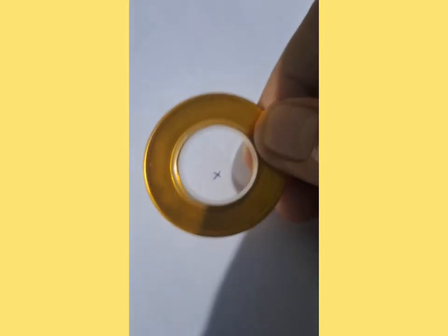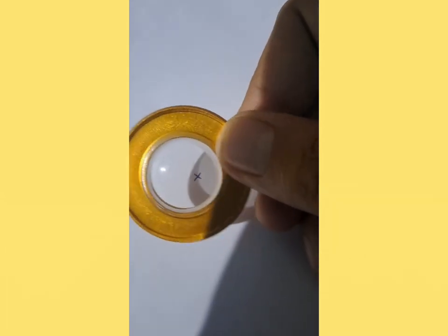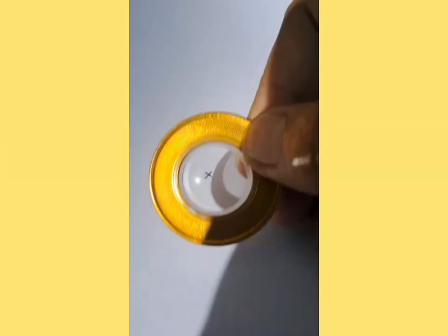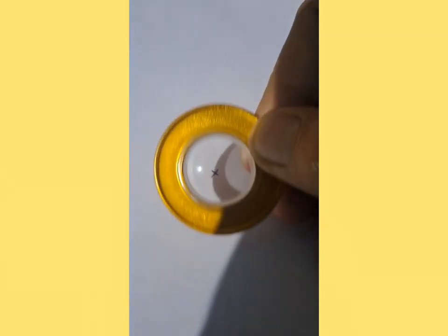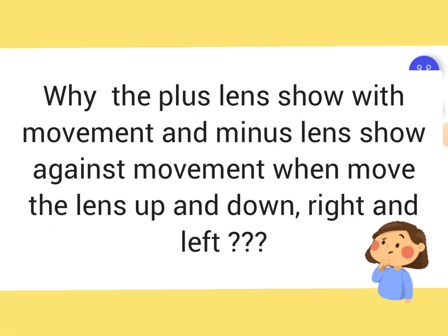This is the concave lens — apex downward — so the image moves in the same direction as the lens is moving, because the apex is downward when you move the lens downward. So today I will discuss a very simple thing that most of us get quite confused about: why does a plus lens show against movement, and why does a minus or concave lens show with movement when moved vertically and horizontally in front of the eye?